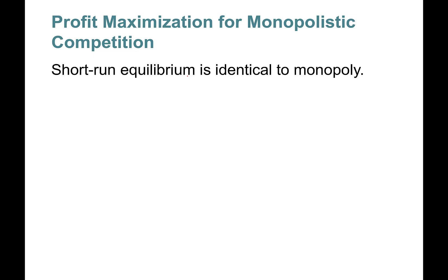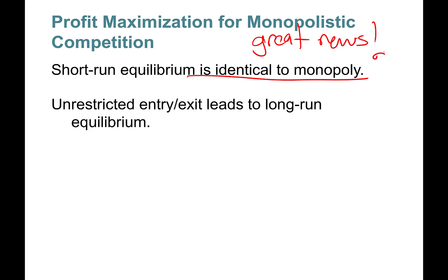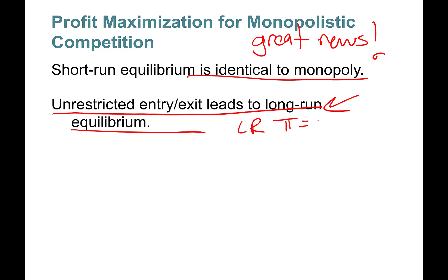For a monopolistically competitive company, the short-run equilibrium is identical to monopoly — everything we did for monopoly applies here. Unrestricted entry and exit leads to a different long-run equilibrium.